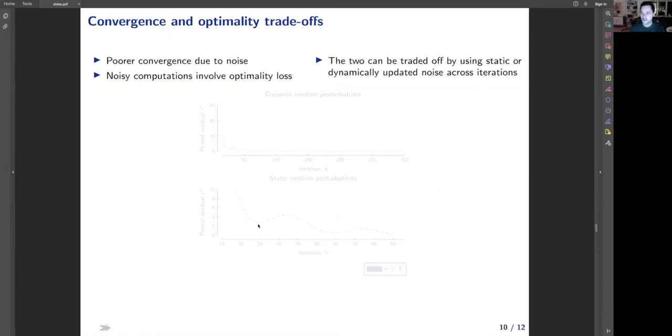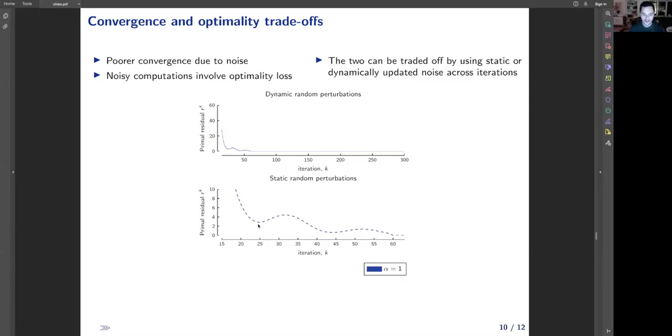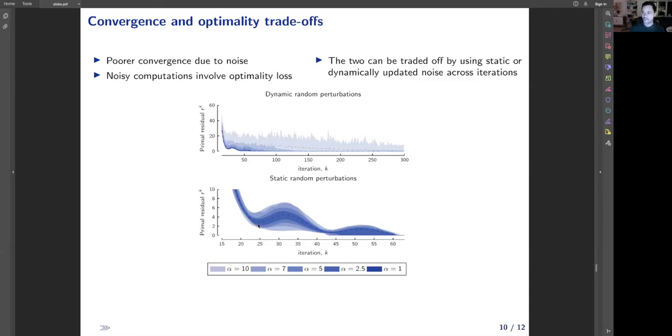We then found the tradeoff between convergence and optimality loss of the noisy ADMM algorithm. We found that we can trade off between the two using either static or dynamic random perturbations. The dynamic random perturbations are updated at every ADMM iteration, while static random perturbations are fixed across the entire course of ADMM iterations. When we increase alpha, we see that it takes more iterations for dynamic perturbations to converge. When privacy parameters are large, it takes 30 iterations on average for algorithm convergence, while static perturbations are immune; the convergence with static perturbations is immune to random noise.